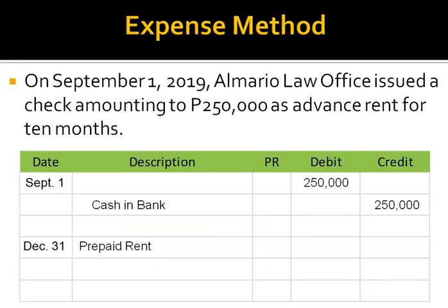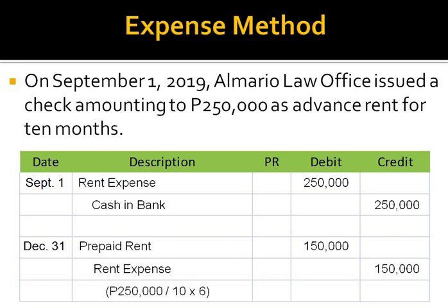Now, let's use the 6 months in our computation. If P250,000 is for 10 months, then P250,000 divided by 10 months will give us the rent per month. If we multiply that monthly rental by 6, then we get the amount of the prepaid rent still to be consumed in the next 6 months after December 31, 2019. And that amount is P150,000 — our adjustment amount on December 31, 2019.